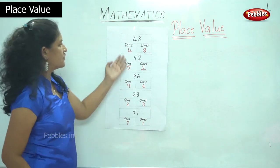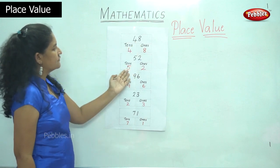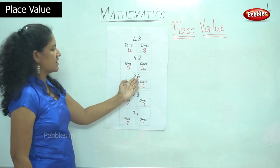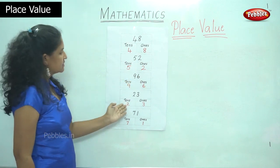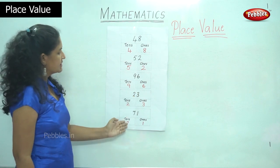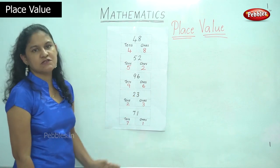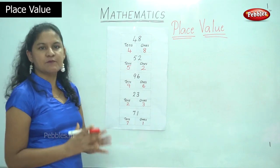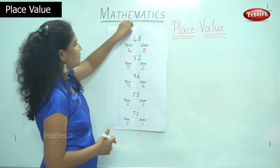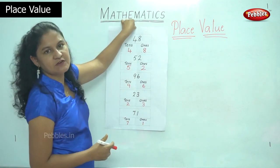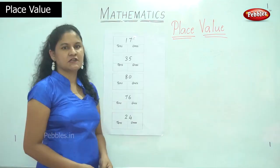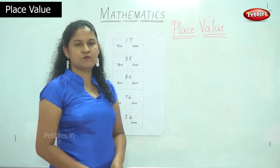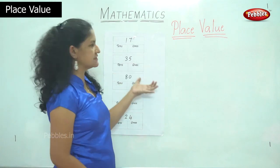So to recap the first 5 numbers: 4 10s and 8 1s is 48; 5 10s and 2 1s is 52; 9 10s and 6 1s is 96; 2 10s and 3 1s is 23; 7 10s and 1 1s is 71. These numbers were randomly selected from 1 to 100. Now we will move on to the place value of the next 5 numbers.